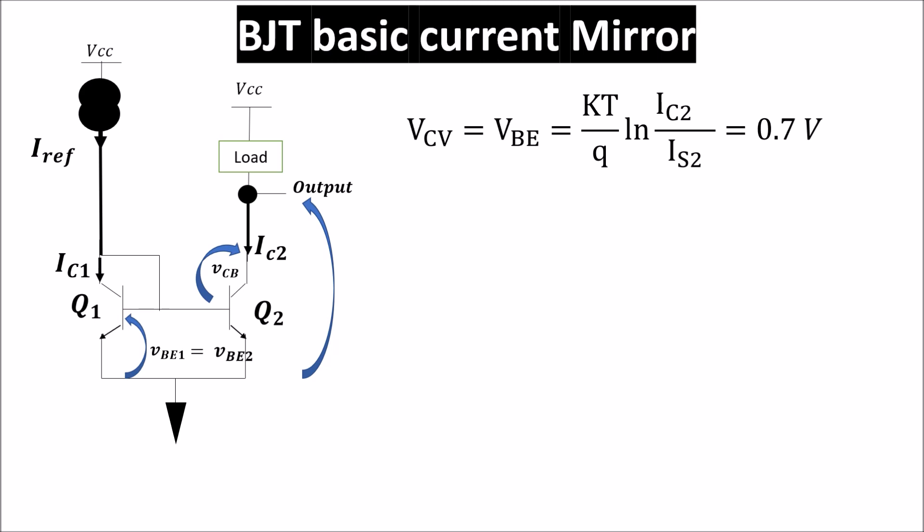Another important feature of current mirrors is the output resistance which is the resistance we see looking into the collector of Q2. The resistance is related to the ability of the mirror to keep the output current stable regardless of the load. Because of early effect we have a finite resistance equal to ro which is the early voltage VA divided by the biasing current IC2 and it can be around 50 kilo ohms. This means that the collector current can change a little because of the load.